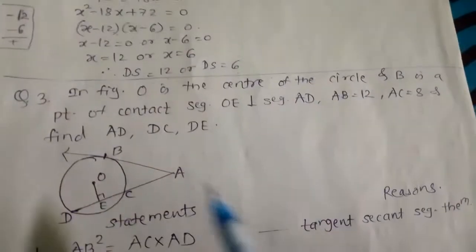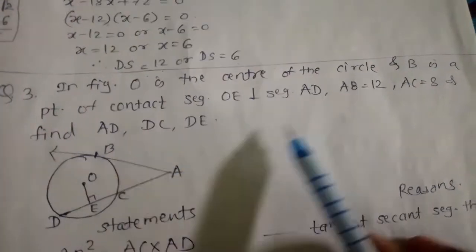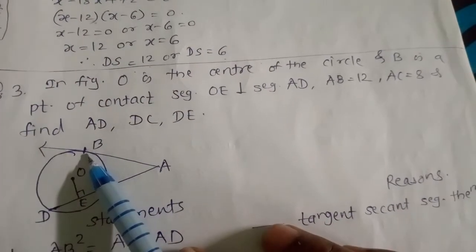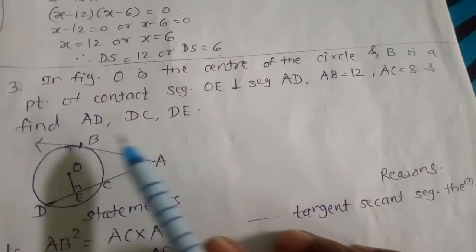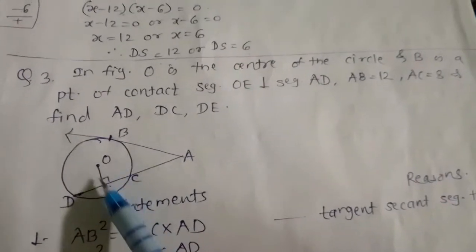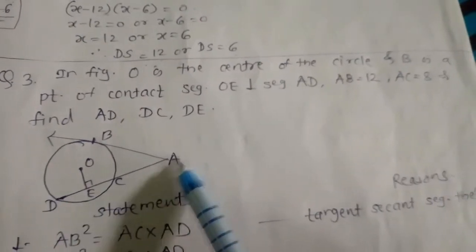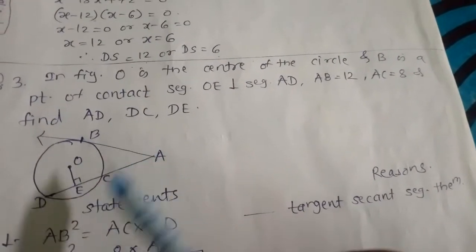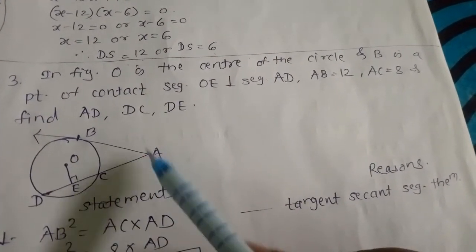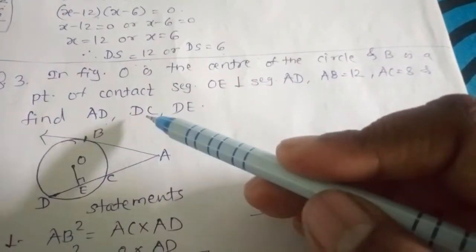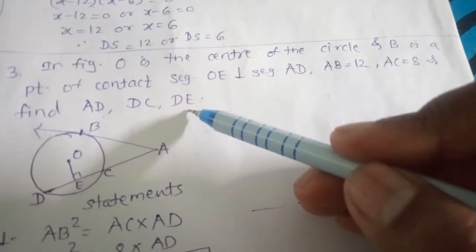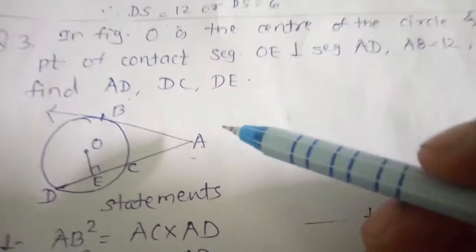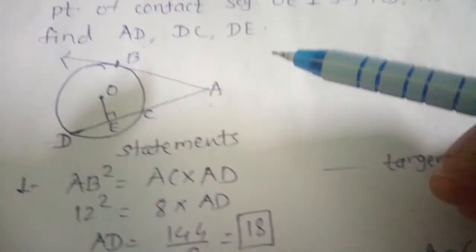Now example number three. In the figure, O is the center of the circle and B is the point of contact. Segment OE is perpendicular to segment AD. AB = 12, AC = 8. We have to find AD, DC, and DE. Since there is a tangent and a secant, we apply the tangent-secant segment theorem: AB² = AC × AD.